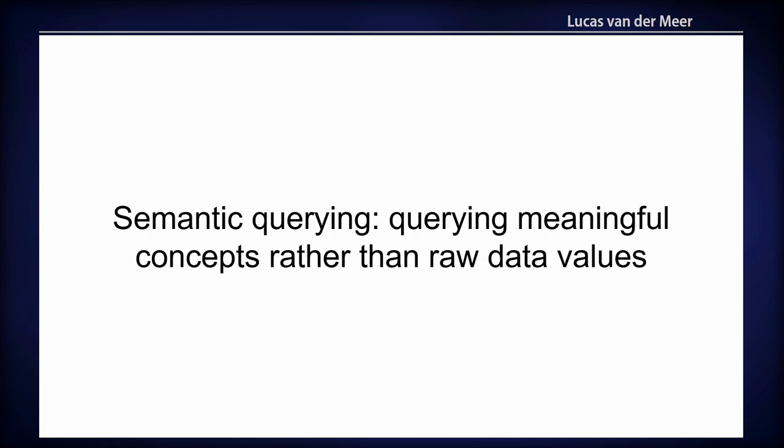And that is what we then called semantic querying. So instead of querying the raw data values that are in the data cube, you actually query meaningful concepts that you are interested in, and that have a meaning in the real world. For example, green space, forest, water, lakes.